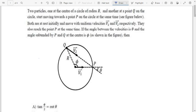Particle starts from point Q and at the same point at the same time particle starts from the center of the circle. They move at velocity V2 and V1 respectively and they reach at point P simultaneously.